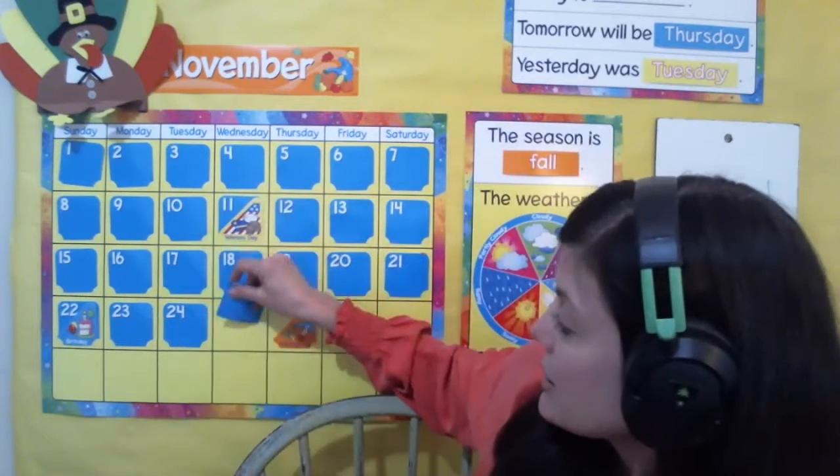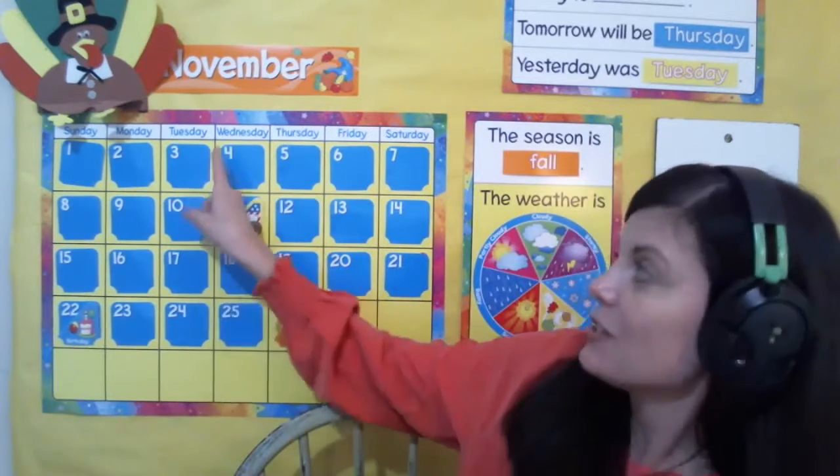Today is November 25th. Now let's look all the way up the calendar and you'll see that today starts with a W. W sounds like this — W, W, W. So what day do you think it is today? The beginning sound is W. Wednesday. It's Wednesday today.